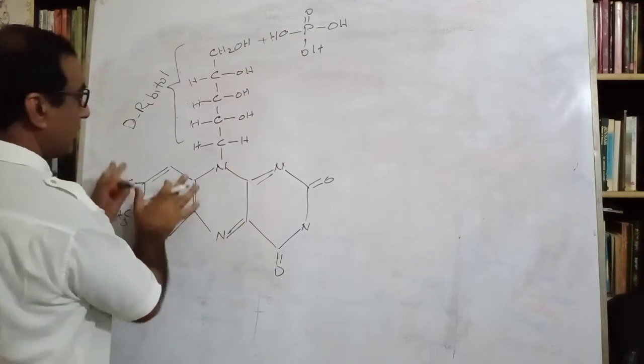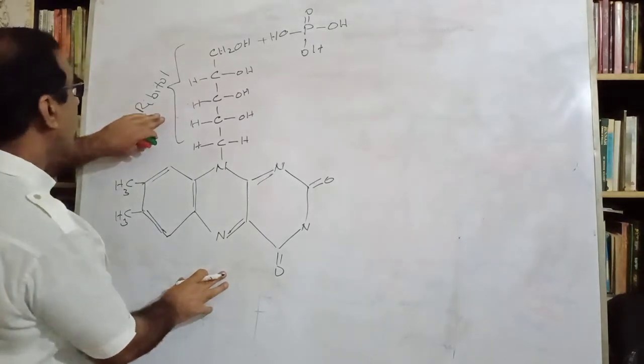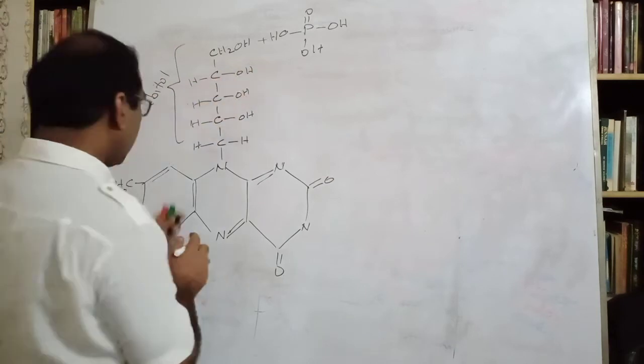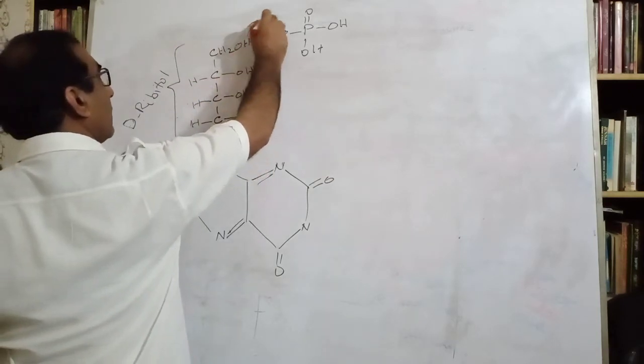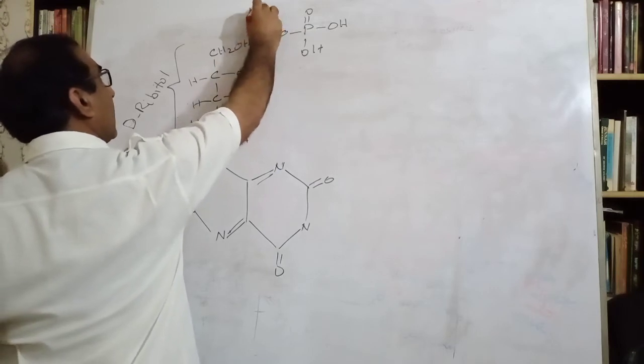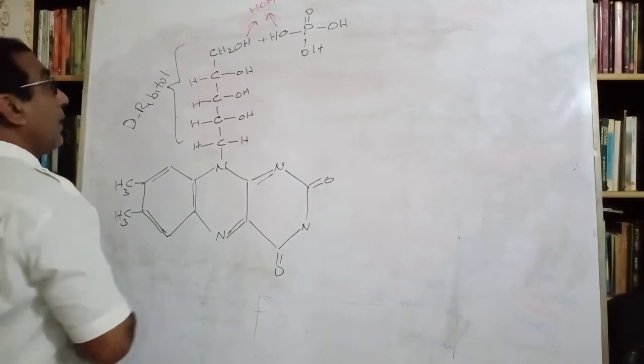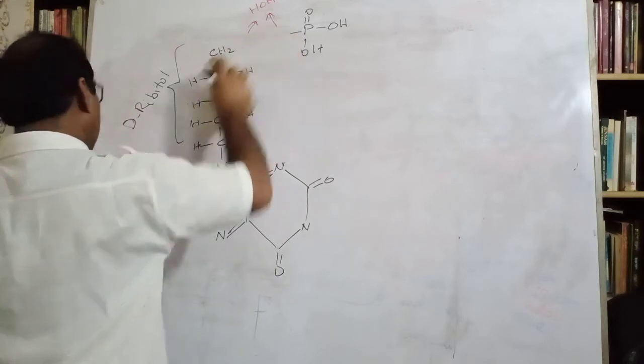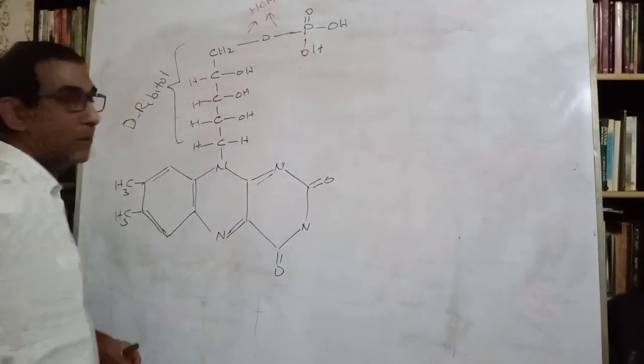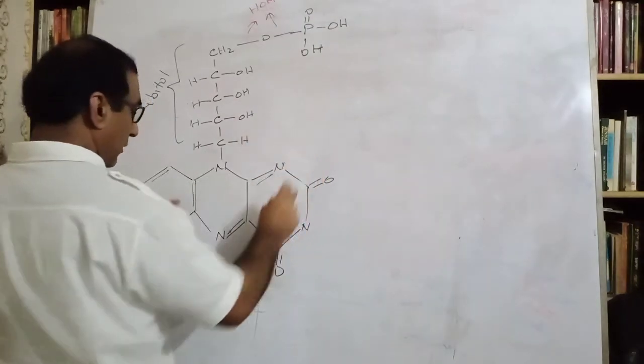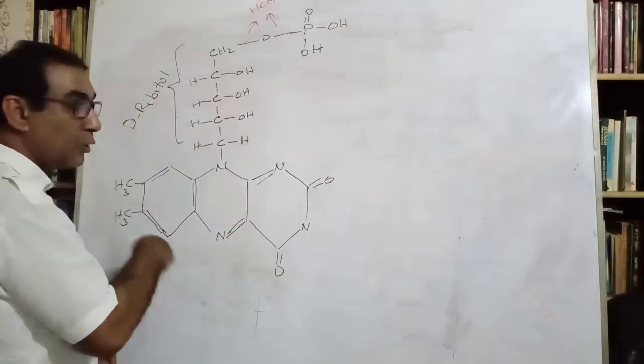Flavin molecule along with D-ribitol, it reacts with the phosphate and water is removed. And what is formed, you know? This is now Flavin mononucleotide.